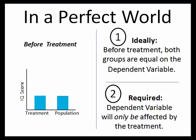To restate: in a perfect world, ideally, before we did any treatment, both of our groups would be equal on the dependent variable. In our scenario, we're testing vitamin water to see if it has an impact on IQ. So ideally, the average IQ for participants in our treatment group should match that of the population — they should both have an average IQ of 100 as a group. The other essential part of research is that the dependent variable is systematically affected only by the treatment. If there's any systematic difference between your two groups, that difference should only be because of your manipulation. That's non-negotiable.